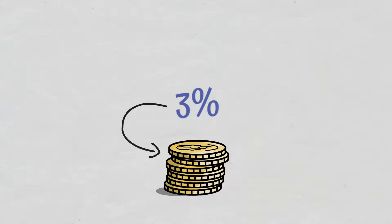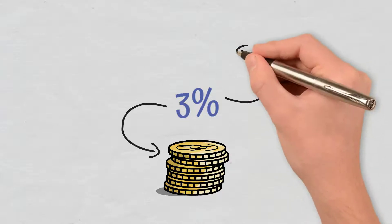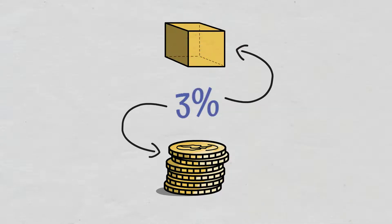For example, if a validator owns 3% of the available staked cryptos, theoretically they are allowed to exploit 3% of the blocks.